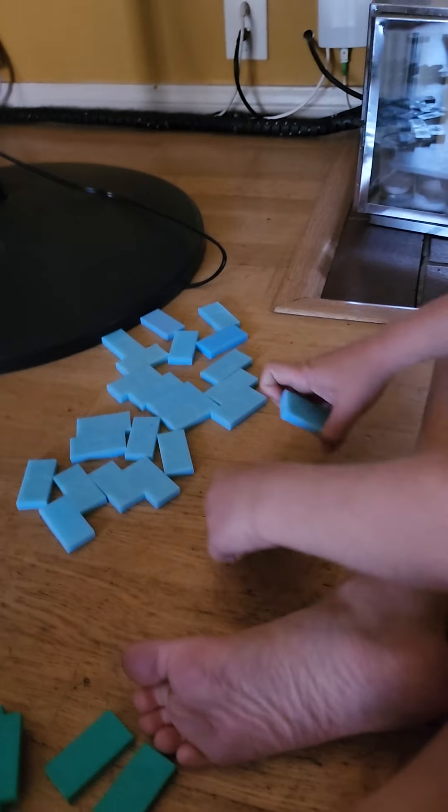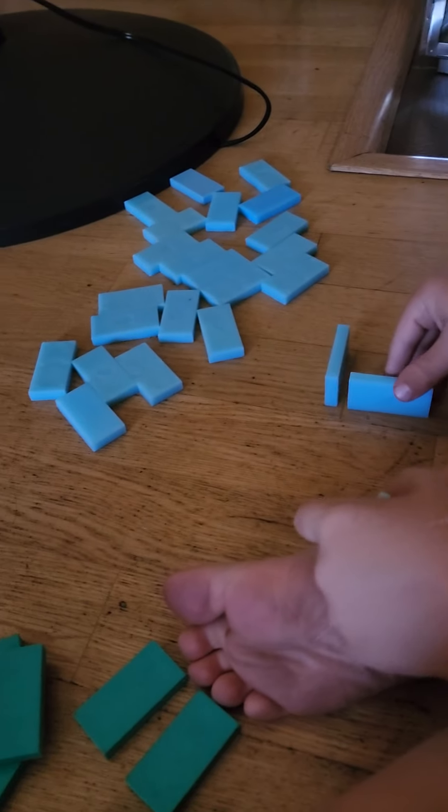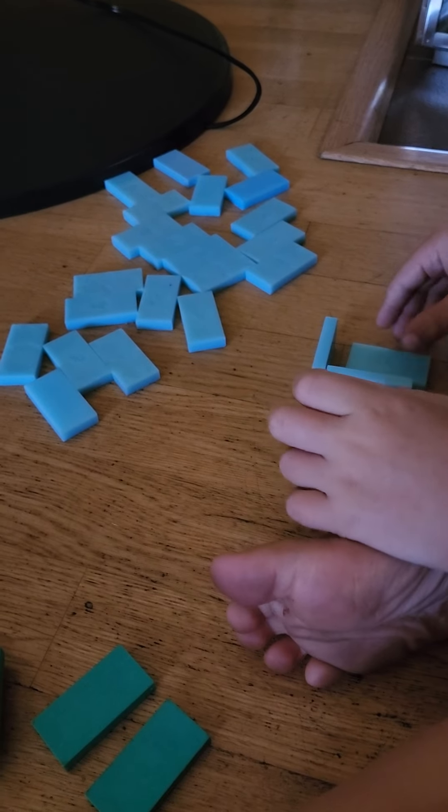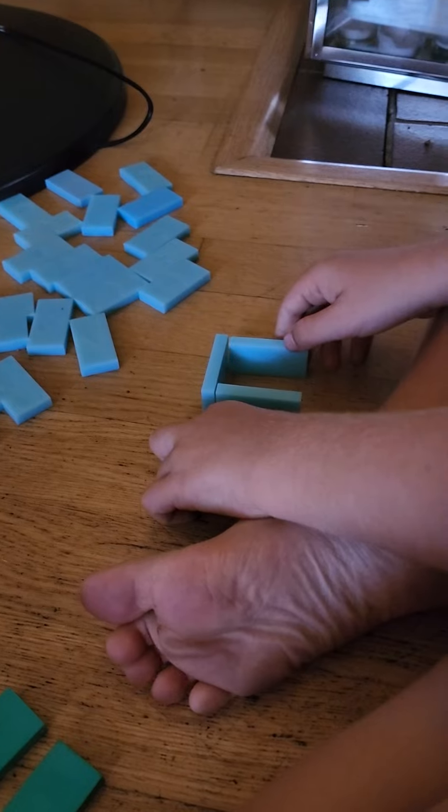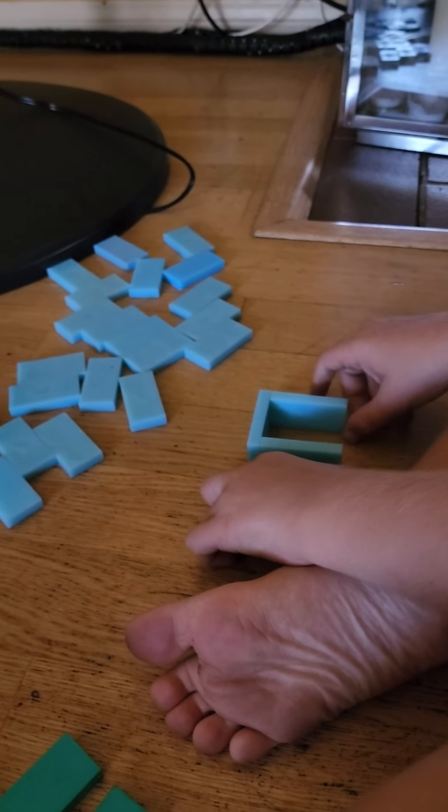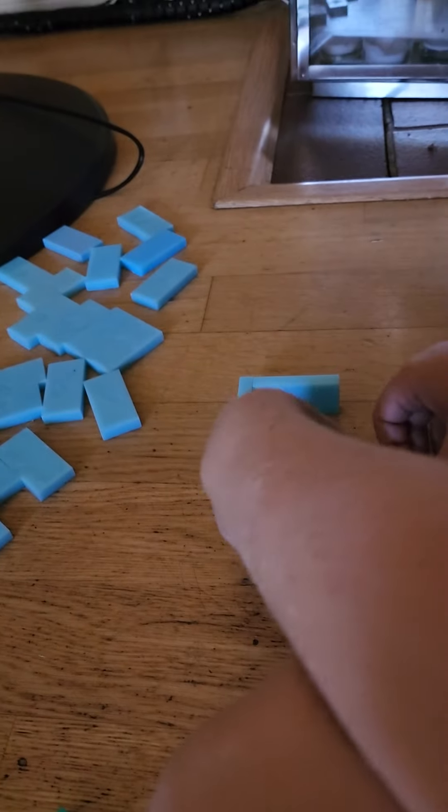The thing I do first is I take three dominoes and I place them as you see like this, like an upside down U or a regular U. Now what I do for measuring is I...